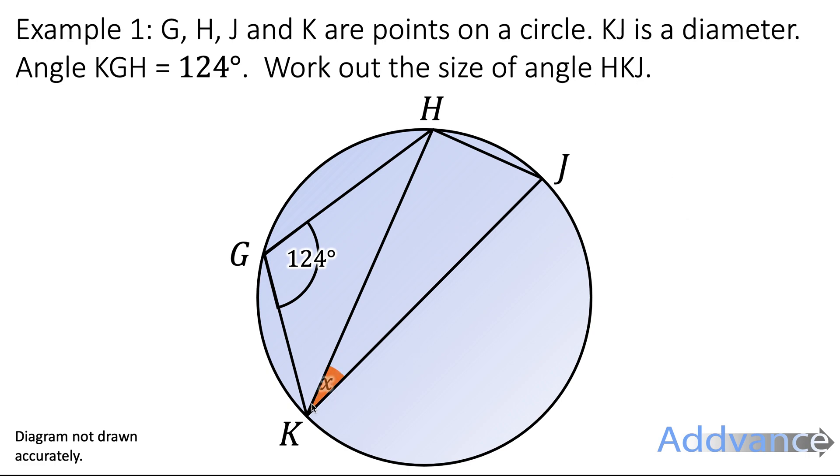Okay, so we're trying to find this angle here. It's the angle HKJ. When you've got it written like this, it's always the middle letter that tells you where it is. We also know that this angle is 124 degrees and that this is the diameter here from K to J.